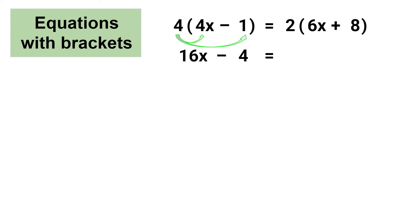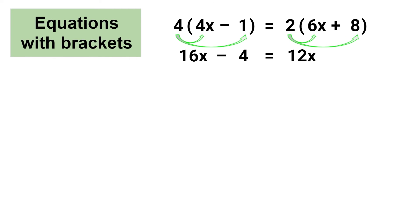Now that I've expanded the brackets on the left side of the equal sign, I'm going to also expand on the right side. I'm going to multiply 2 by all of the terms inside the brackets. So first 2 multiplied by 6x equals 12x, and next 2 multiplied by 8 equals 16.